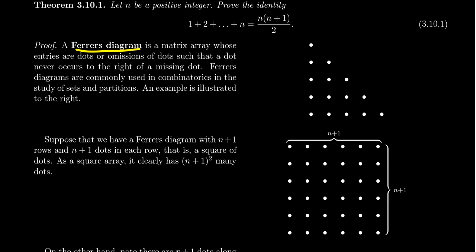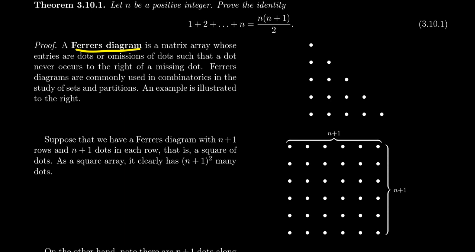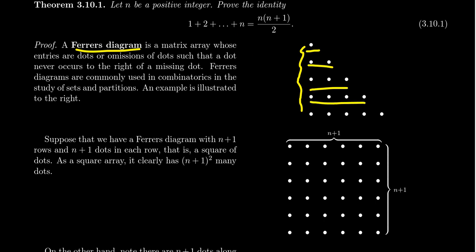To prove this formula, I want to introduce the notion of a Ferris diagram. A Ferris diagram is a two-dimensional matrix array consisting of dots and omissions - think of a zero-one matrix where a dot represents a one and an omission represents a zero. The rule is that dots are always to the left of the blanks, and typically rows of larger size are placed downward. The Ferris diagram shown here has one, two, three, four, five rows. Counting the size of a Ferris diagram with five rows would give the sum we're looking for.